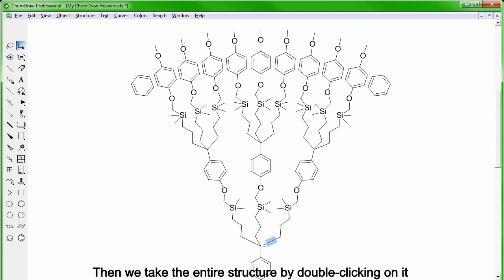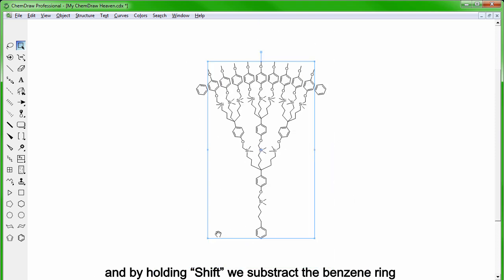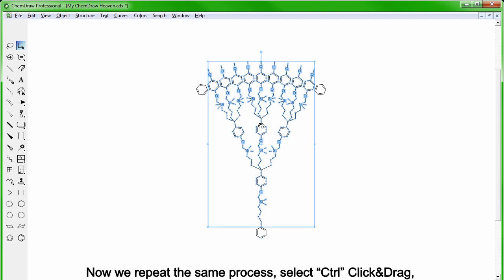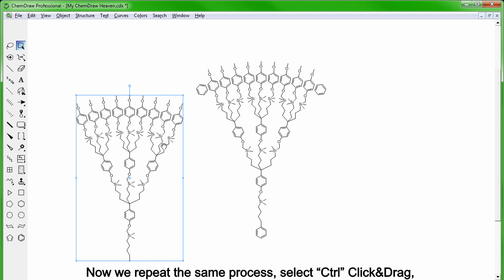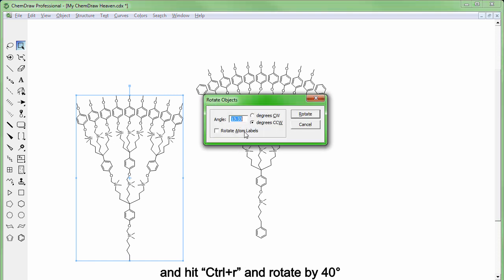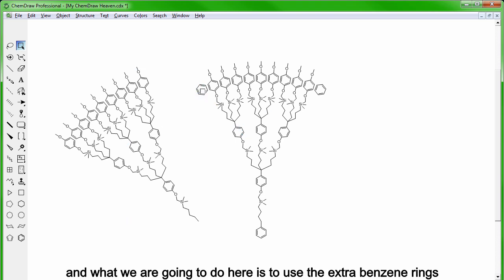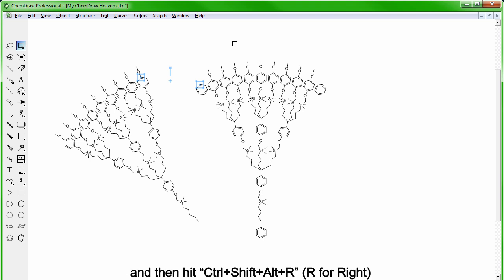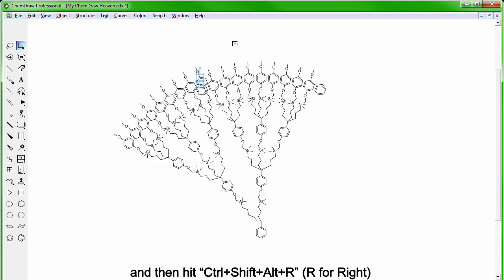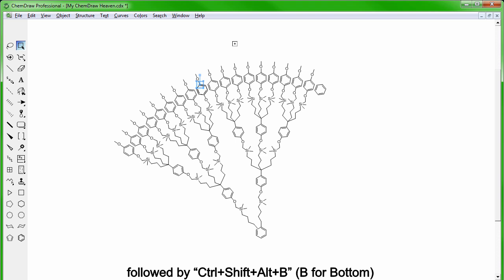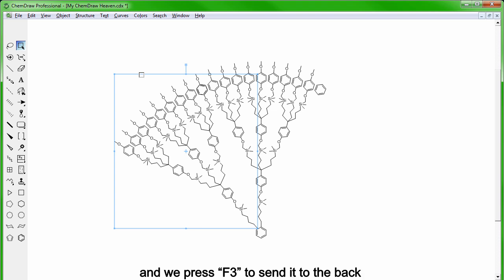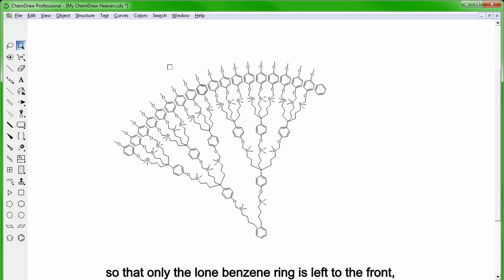Then we take the entire structure by double clicking on it and by holding SHIFT we subtract the benzene ring from the selection. Now we repeat the same process, select CTRL-click and drag and then hit CTRL-R and rotate in that case by 40 degrees. And what we are going to do here is to use the extra benzene rings as anchor points so we can select both carbon atoms that need to overlap and then hit CTRL-SHIFT-ALT-R, R for right, followed by CTRL-SHIFT-ALT-B, B for bottom. Then we select the entire structure by double clicking and we press F3 to send it to the back so that only the lone benzene ring is left to the front, which we can then select by double click and delete.